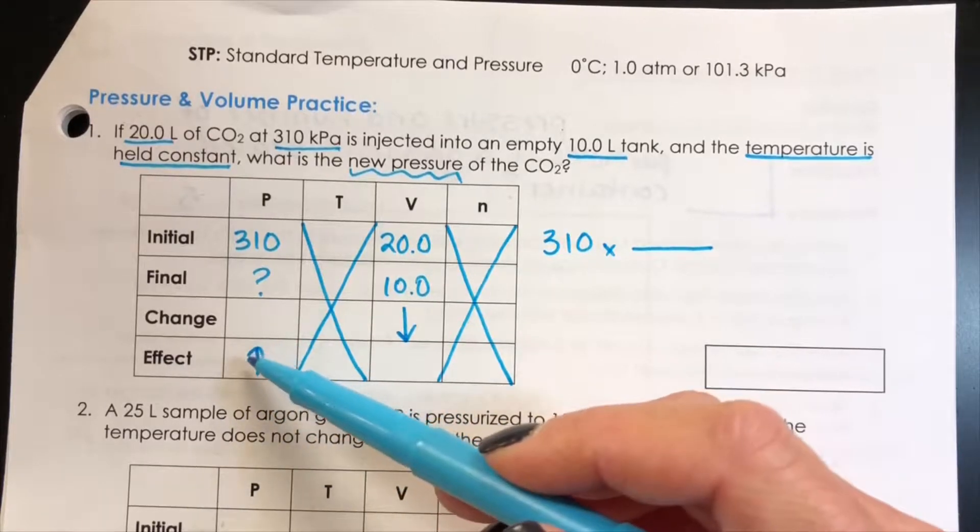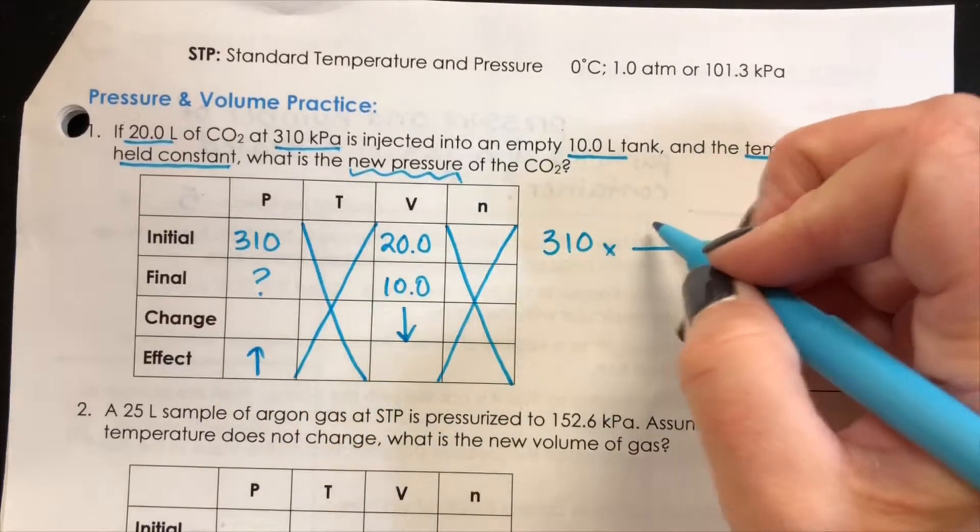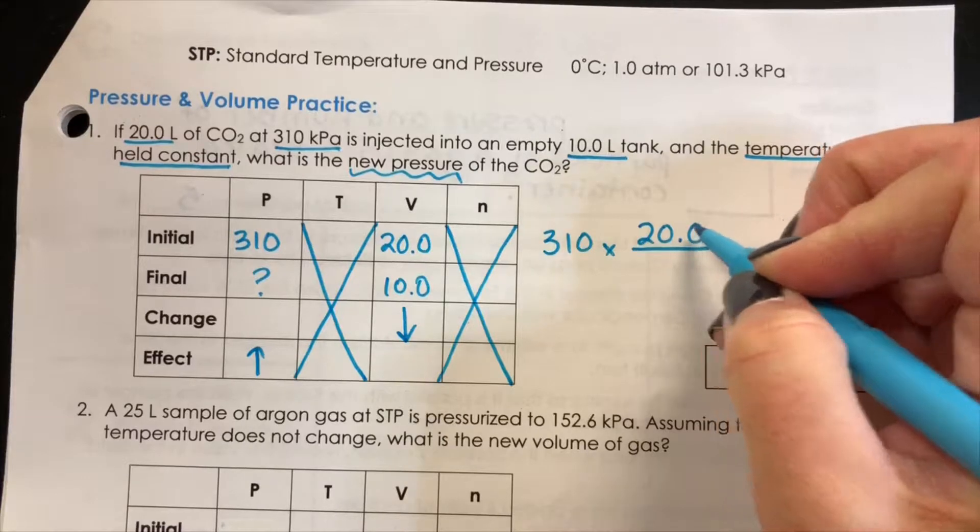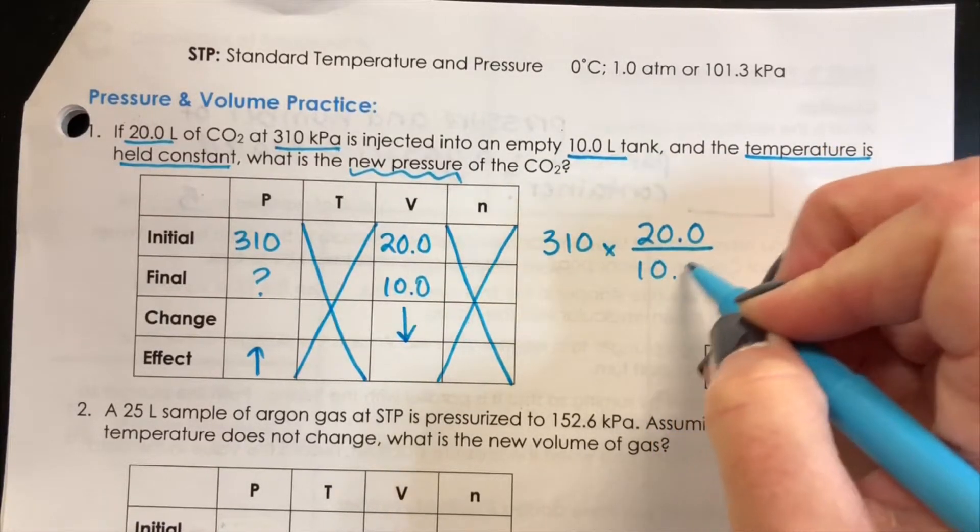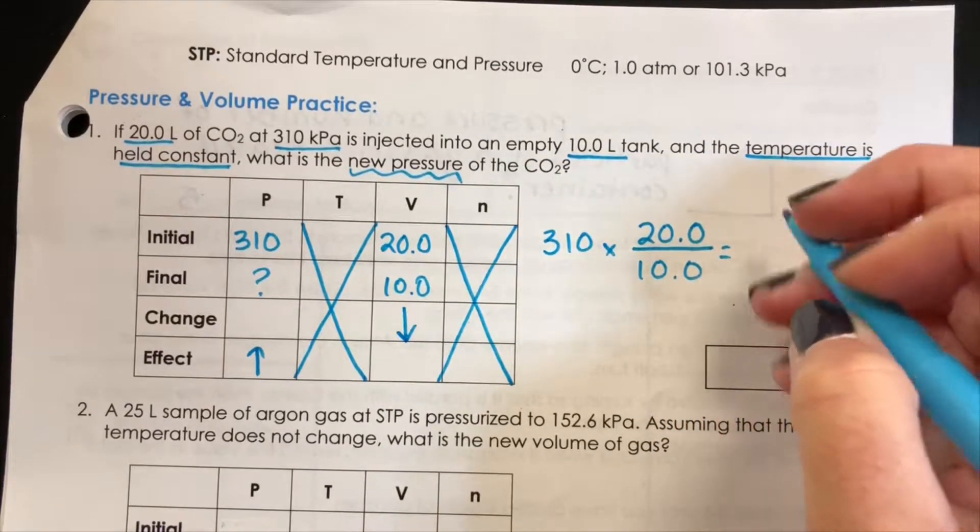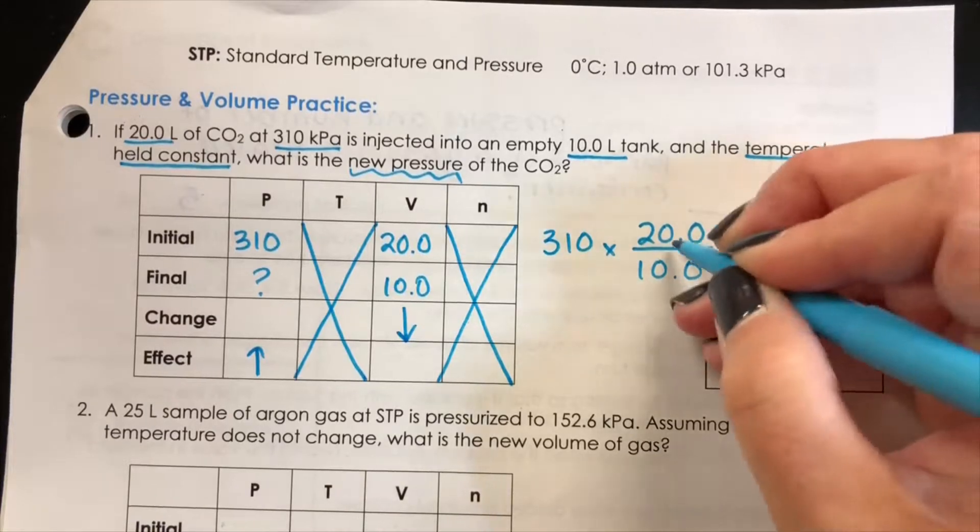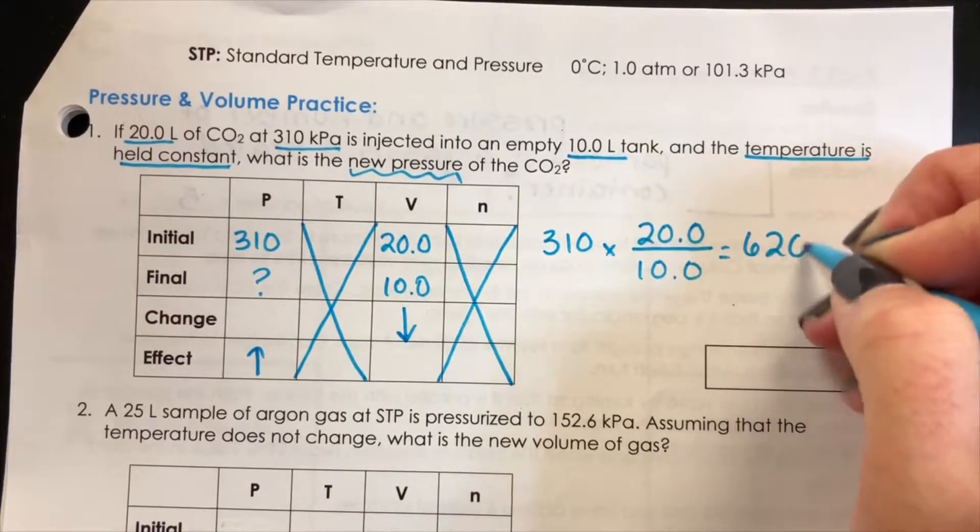Since we want our pressure to be higher, we're going to set it up with the higher or larger number on the top of the proportion which is 20 over 10, and when we multiply this, it's really multiplying it by 2 which is 620.